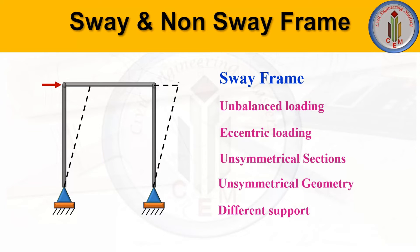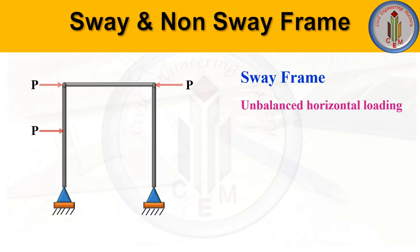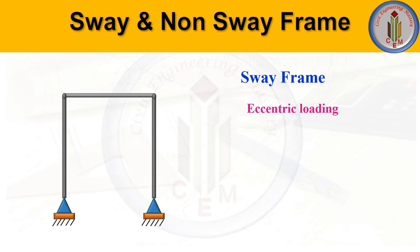There are many factors which cause a sway frame: unbalanced loading, eccentric loading, unsymmetrical sections, unsymmetrical geometry, and different support conditions. For unbalanced horizontal loading, a load P acting horizontally causes the frame to deflect. If another horizontal load acts in the opposite direction, it becomes balanced and prevents sway. An unbalanced horizontal load makes the frame sway in the horizontal direction.